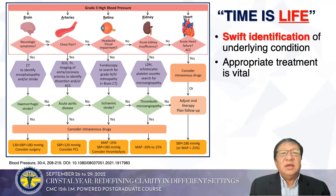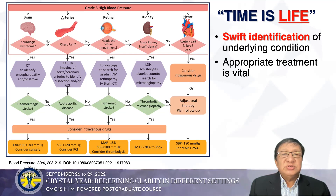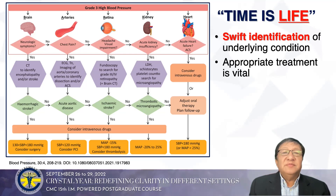For retina: headache and visual impairment warrant fundoscopic exam to search for retinopathy plus a brain CT scan. If there is ischemic stroke, consider IV drugs to control blood pressure. For kidneys: if there's acute kidney insufficiency, check LDH, schistocytes, and platelet count to search for microangiopathy; if thrombotic microangiopathy is found, consider IV drugs. For heart failure and ACS, work very fast and consider IV drugs or adjust oral therapy.